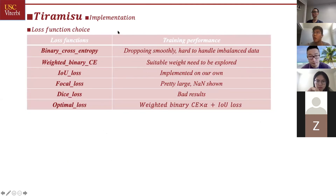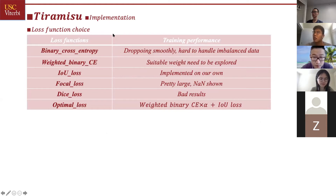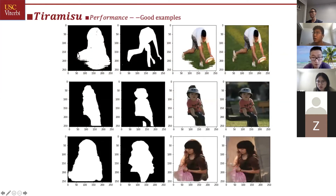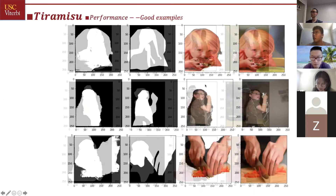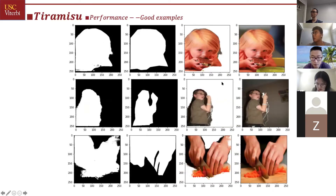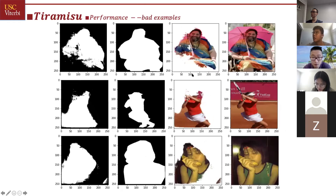During experiments, we found that for this highly imbalanced dataset, the loss function is really important because it influences the optimization direction. So we did some experiments. Here is the IOU loss, which is implemented on our own. Here is the output of the Tiramisu model — these are some good examples. There are also some bad examples; as you can see, some human parts are missing, like the head and arms.